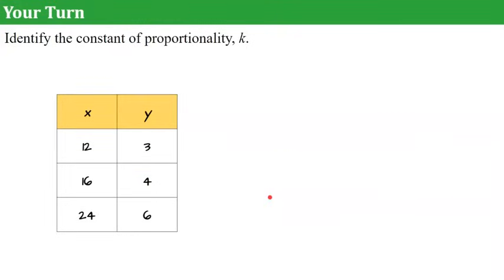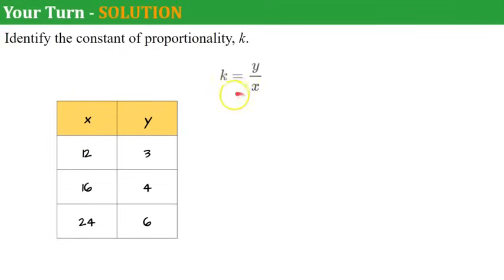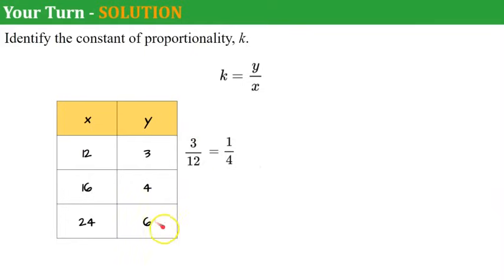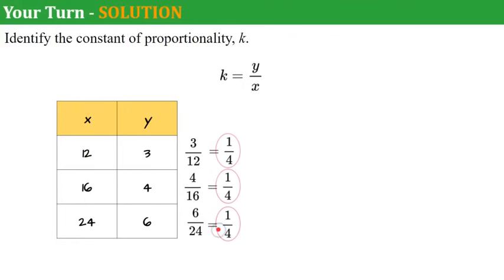Your turn again — identify the constant of proportionality k. Welcome back. Reminding you that k is a ratio of y to x. So y is 3 over x of 12, which simplifies to 1/4. Continuing to verify: 4 to 16 is 1/4, and 6 over 24 also simplifies to 1/4. They're all the same, so the constant of proportionality is 1/4.